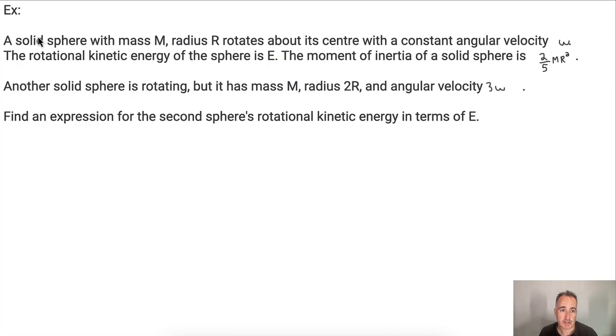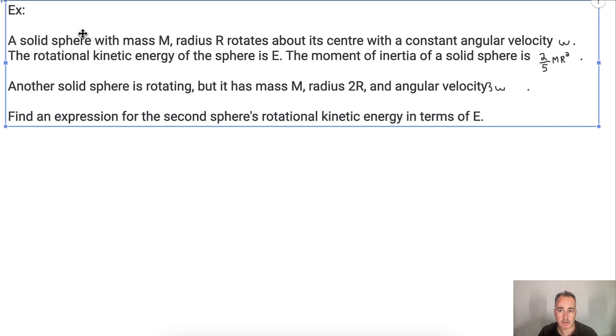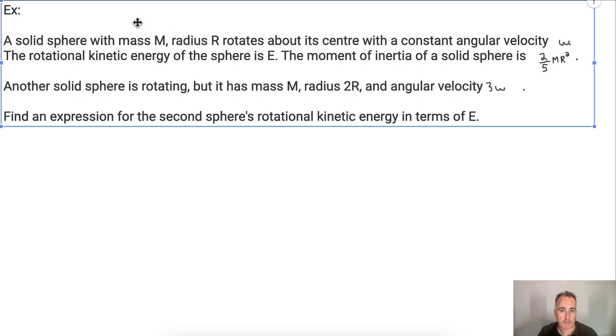So we're going to have here a solid sphere. It has a mass M, has a radius R, and it rotates about its center with a constant angular velocity omega. Now, we're told that the rotational kinetic energy of this sphere is supposed to be E. We have the moment of inertia of a solid sphere. We're told it's two-fifths MR squared.